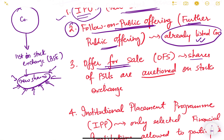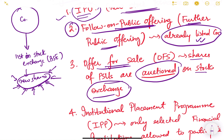The second process is Follow-on Public Offering, also known as FPO. This means the company is already listed on the stock exchange, but the government now offers more shares to the public.